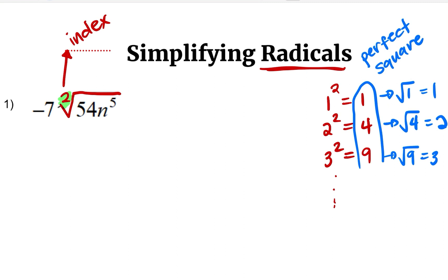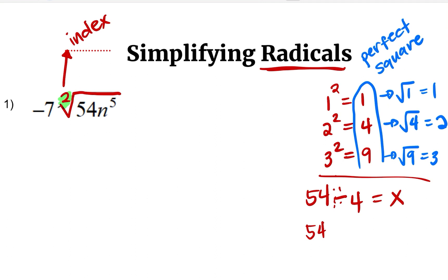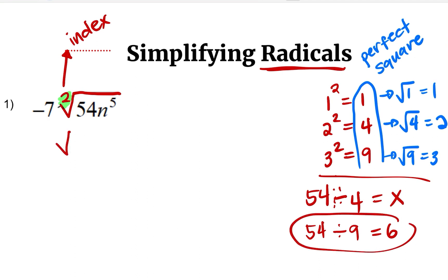Now I am going to try to find factors of 54 where one of the factors should be a perfect square. So I'll try 54 divided by four — that gives me a decimal, so I'm not looking for that. I'll try the next number: 54 divided by nine, which gives me six. So I will split 54 into nine times six.